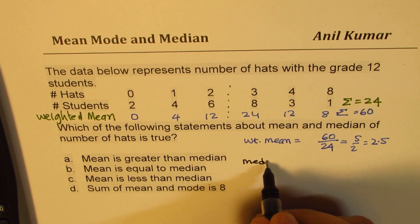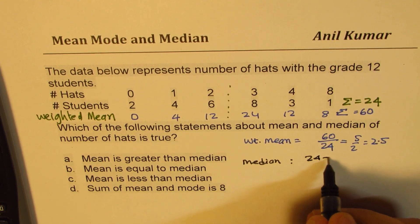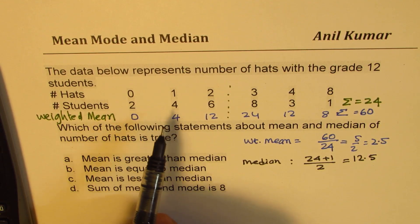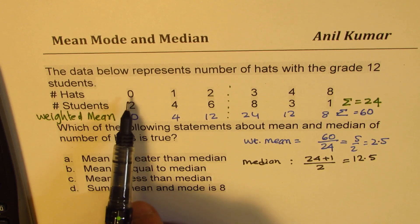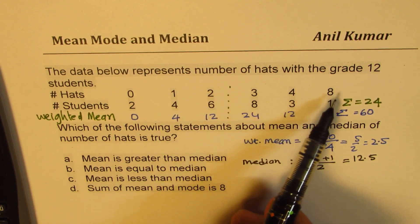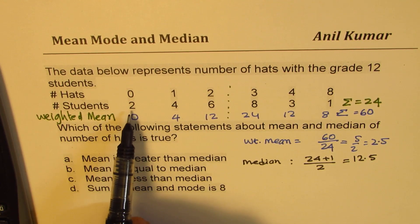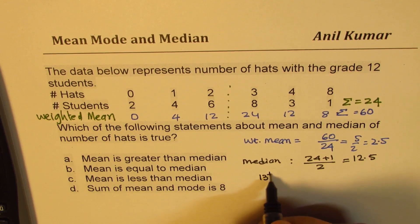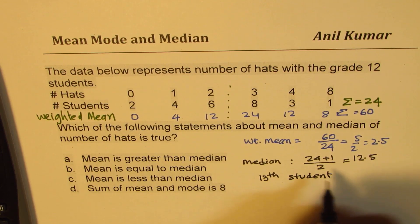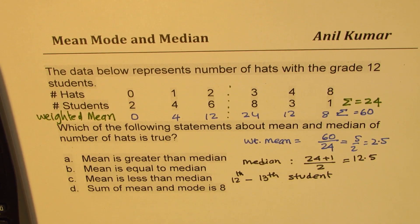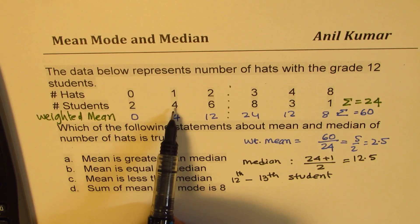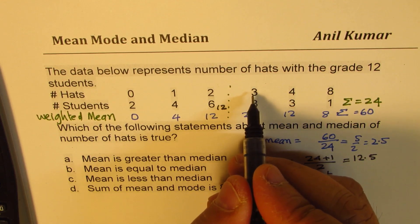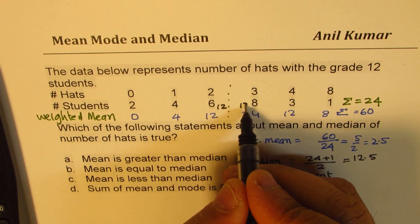Now, let us see how do we calculate the median. For getting the median, we have to look for the center value. There are 24 in all, so we'll do 24 plus 1 divided by 2, which is 12.5. Now, 12.5, if you count, since the number of hats are already arranged in this order, 0, 1, 2, 3, 4, 8, increasing order, we can actually see the 13th student. We are looking for student in between 12.5. That means we are looking for the 13th student, and the 12th student. In between. If you see, 2 plus 4 is 6, 6 plus 6 is 12. So, here we get 12. So, 13th student will have 3 hats.